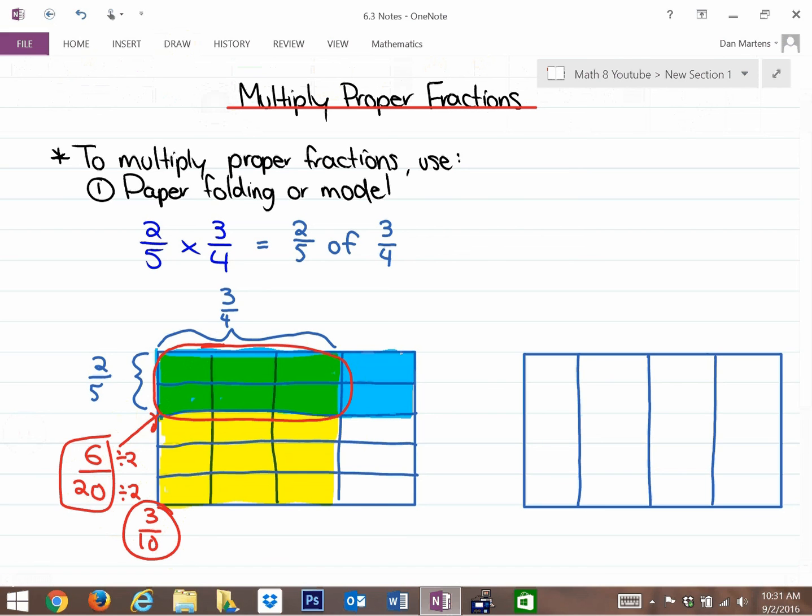The model's nearly identical, except it doesn't use colors, and it doesn't use overlapping parts. But you'll notice that it looks almost identical. So three-quarters would be three out of four columns, except we don't shade it right away. And two-fifths would be two out of five rows.